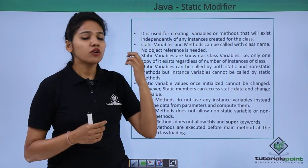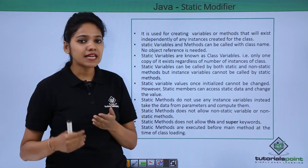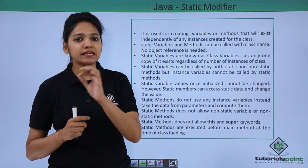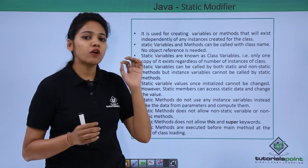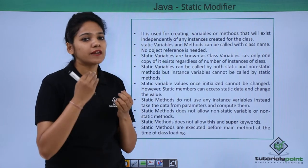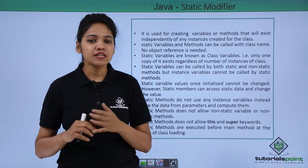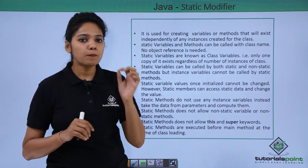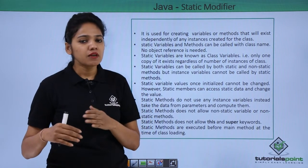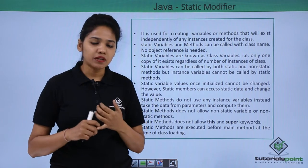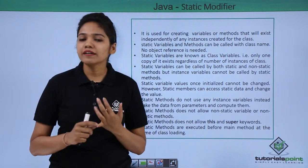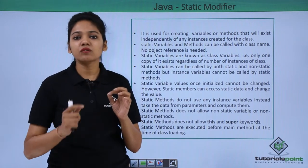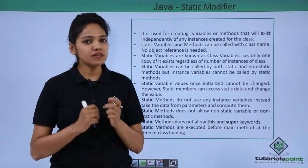Instance variables cannot be called by static methods. For example, if you have created a string instance variable 'name', it cannot be called by static methods. The conclusion is: a static variable can be called by both static and non-static methods, but an instance variable cannot be called by a static method. Additionally, only a static method that accesses a static variable can change its value.